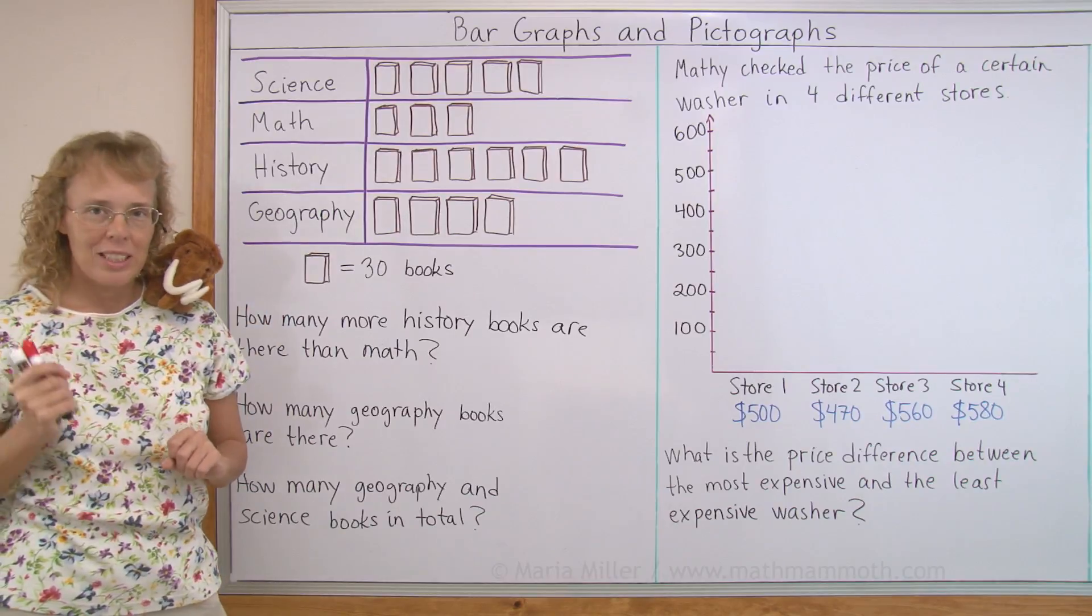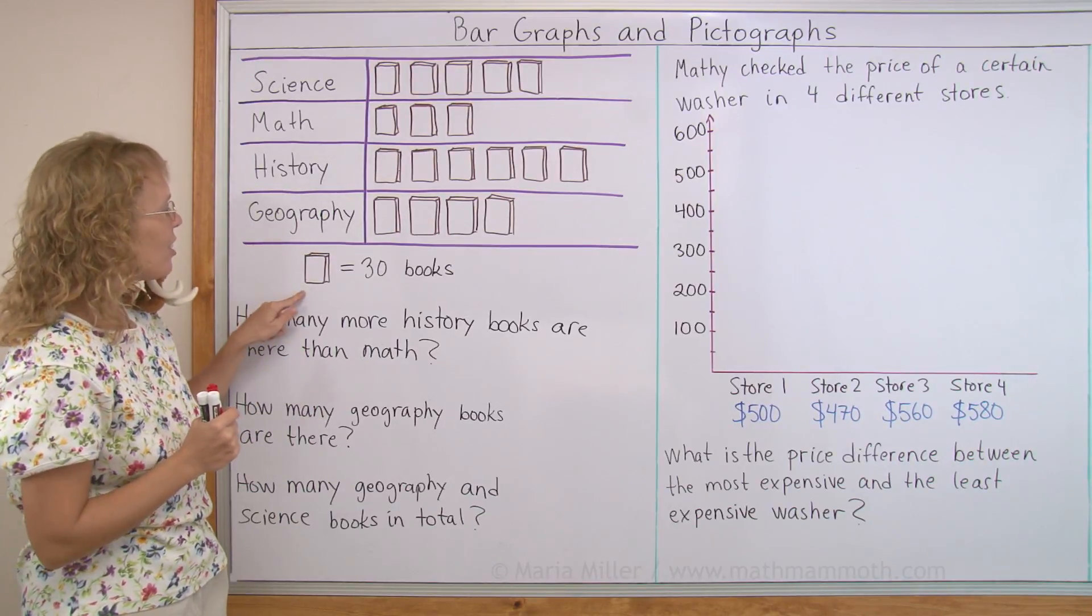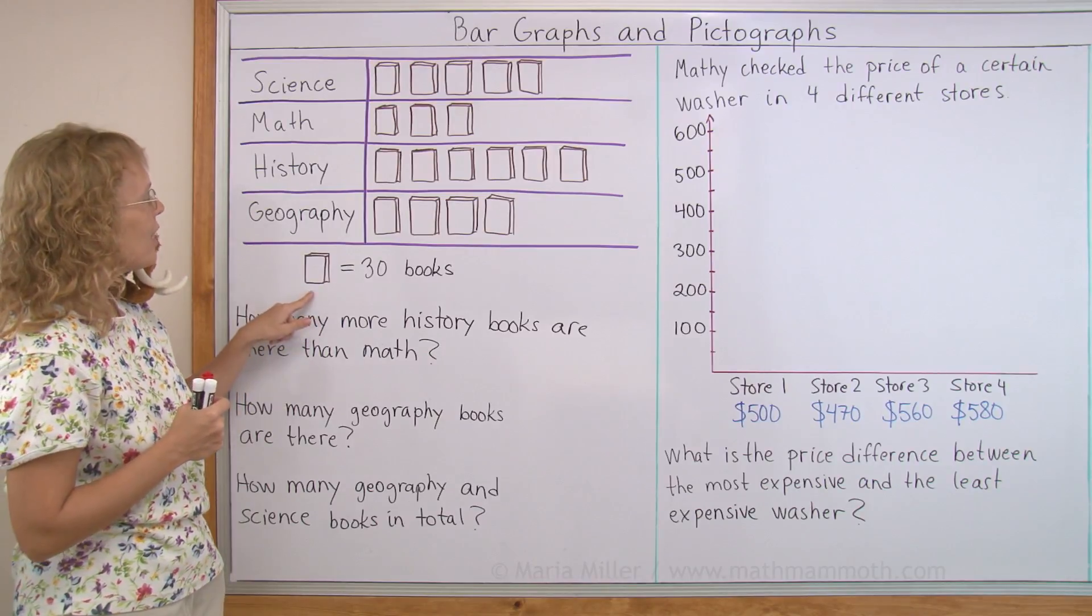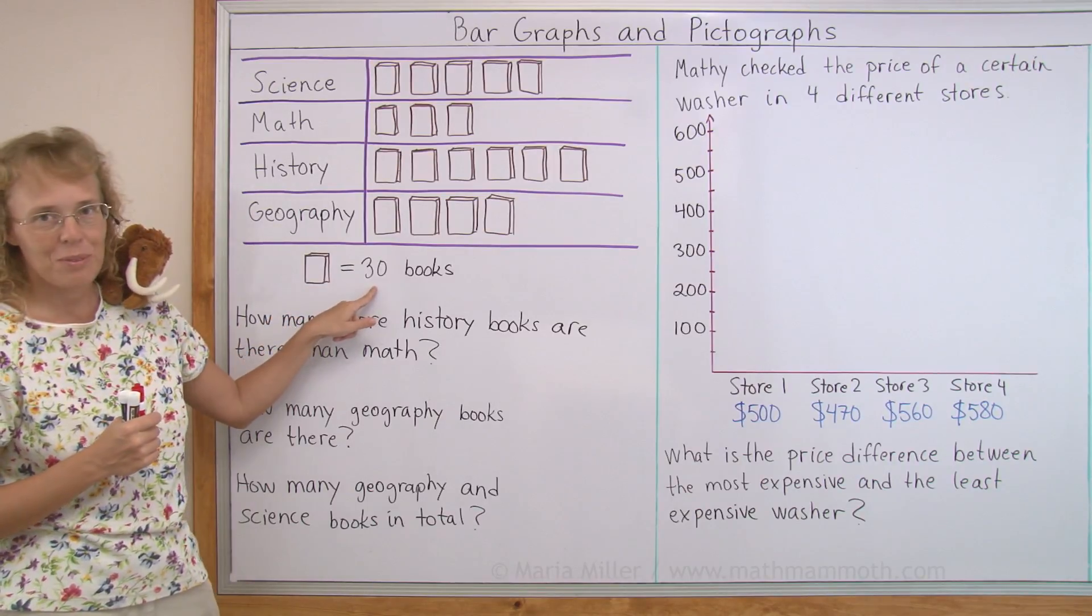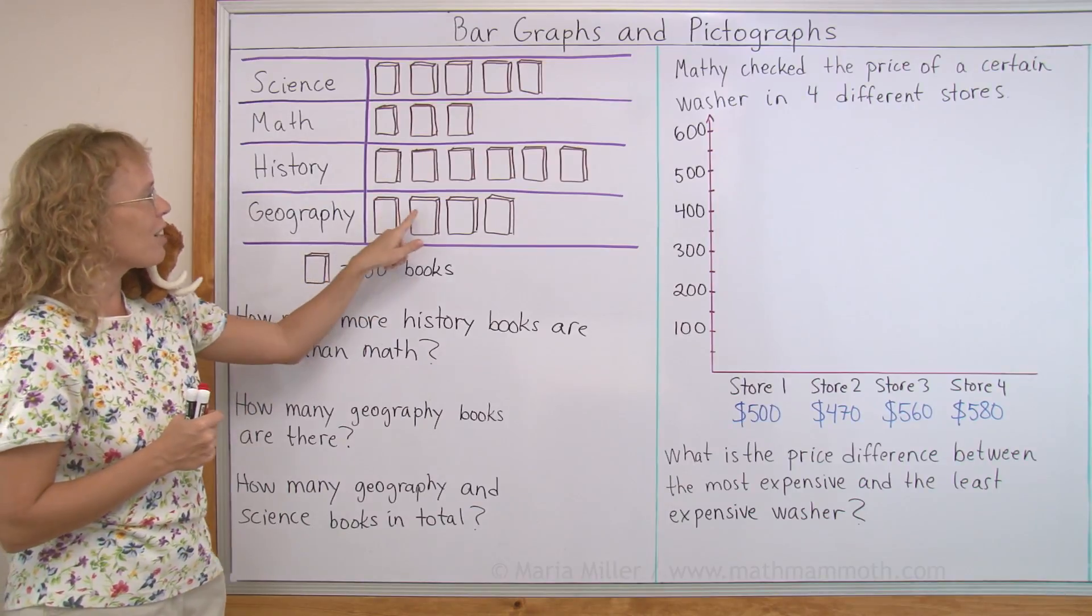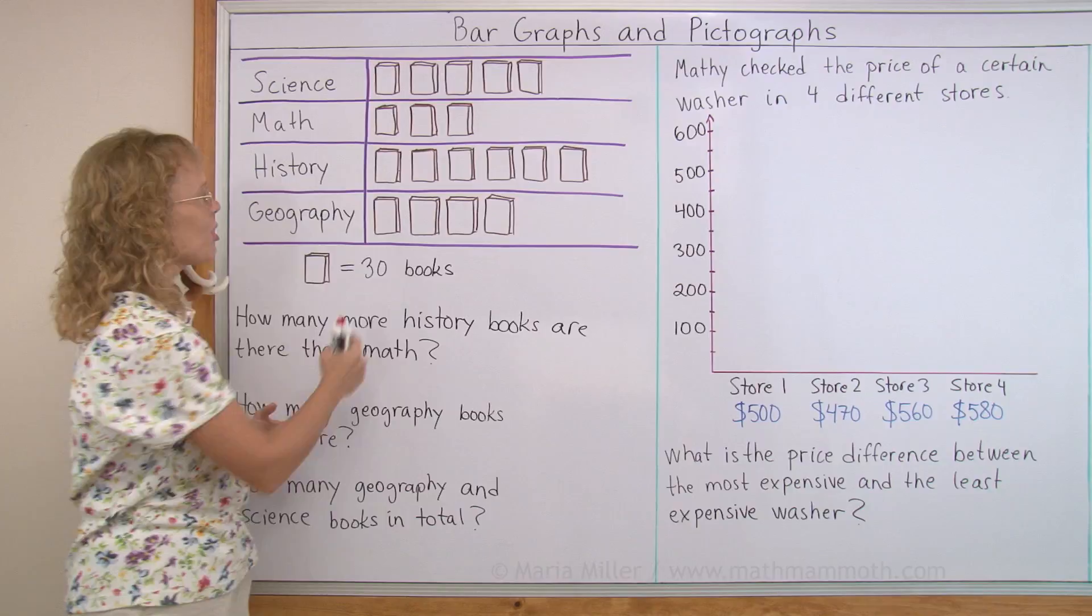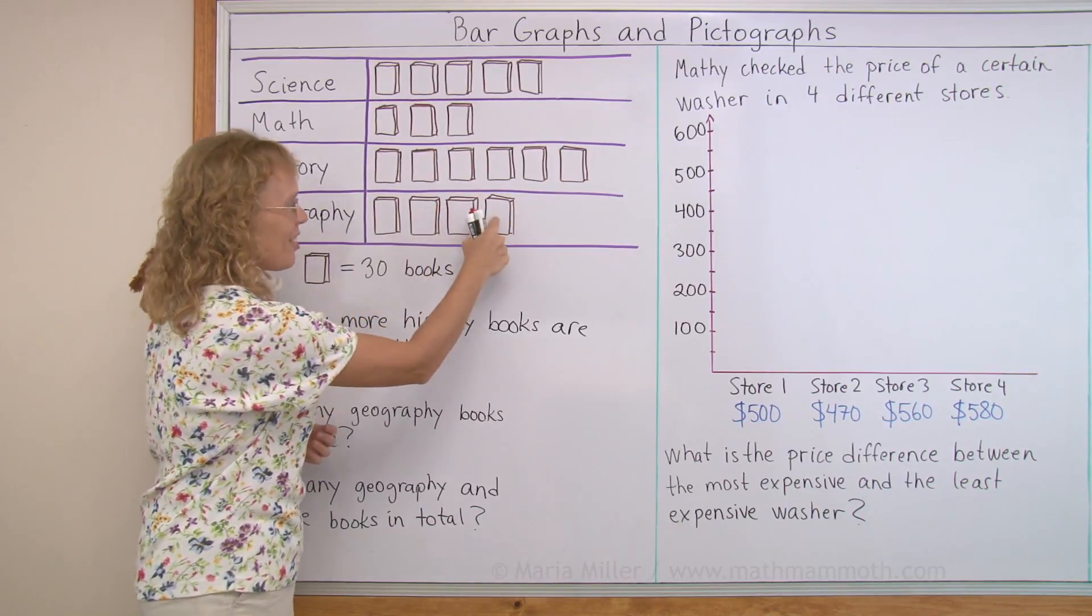A pictograph always has to have a legend that tells us how many this picture means. This time one picture of a book means 30 books. So for geography we do not have just four books in the library. We actually have 30 and 30 and 30 and 30 books.